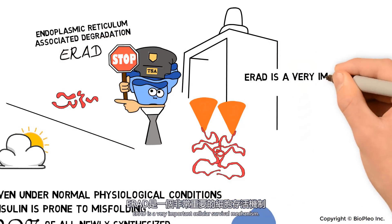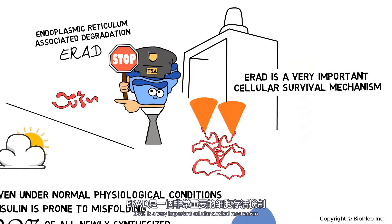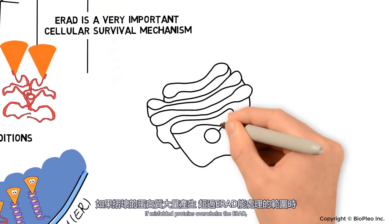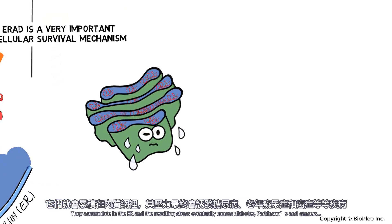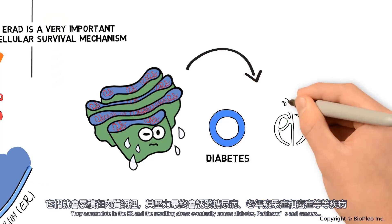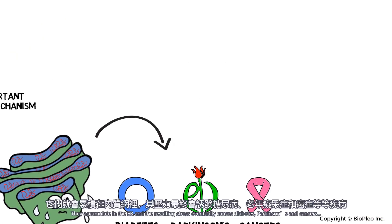ERAD is a very important cellular survival mechanism. If misfolded proteins overwhelm the ERAD, they accumulate in the ER, and the resulting stress eventually causes diabetes, Parkinson's, and cancers.